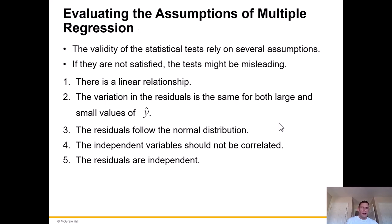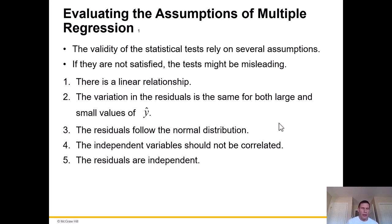The validity of statistical tests relies on several assumptions. Like most statistical methods, if they are not satisfied, the tests could be considered not as robust and possibly misleading. Number one: there is a linear relationship between the variables. Number two: the variation in the residuals is the same for both large and small values of y prime. Number three: the residuals follow the normal distribution. Number four: the independent variables should not be correlated. Number five: the residuals are independent.